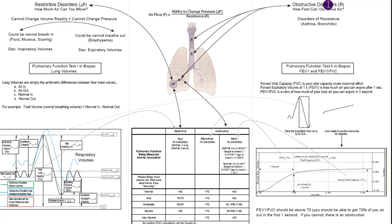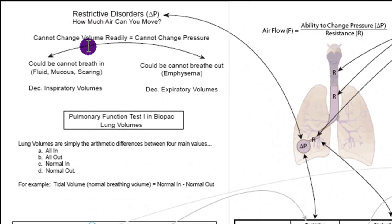Okay, so now that we've defined the main two different types of disorders that affect the lungs, let's come over here and look at restrictive disorders a little bit more closely. First of all, the problem is generally that you can't change the volume of the alveolus, which means you can't change the pressure.